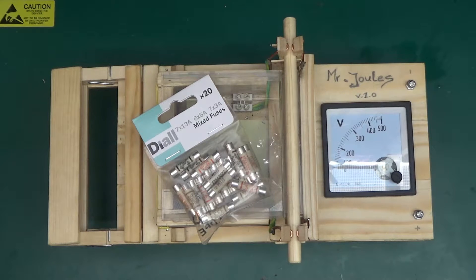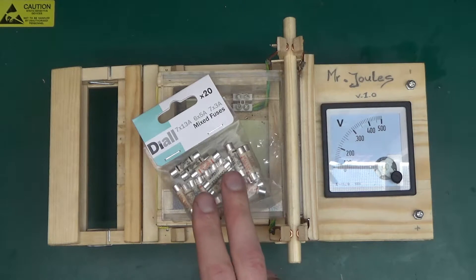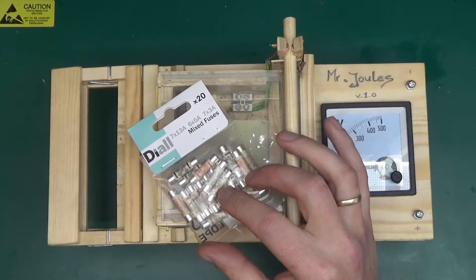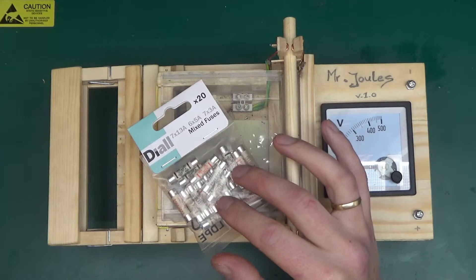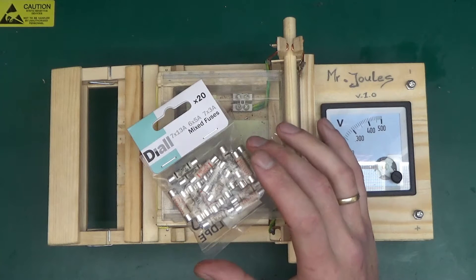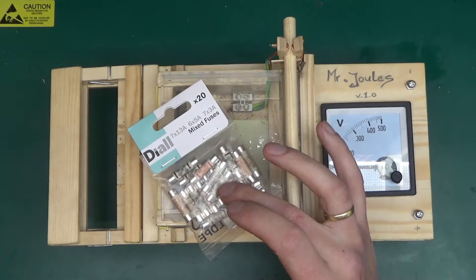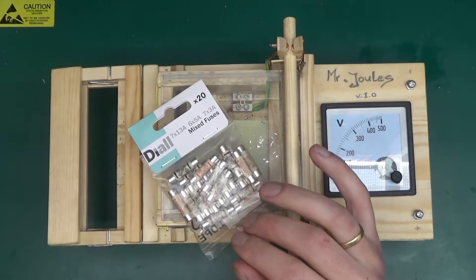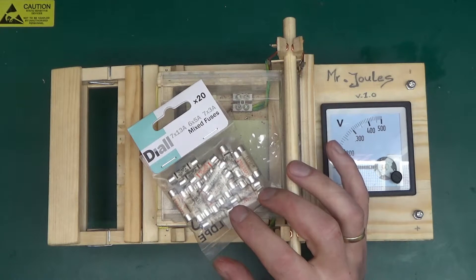Greetings and welcome back to Mr. Jules. In previous episodes I've tested a couple of fuses and found that the lower rating fuse was able to withstand the explosion because it fused much quicker before the explosion took place, and a higher rating fuse because it lets quite a lot more current through basically exploded into pieces.